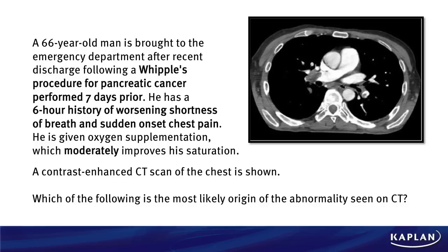A contrast-enhanced CT scan of the chest is shown. Note it's not just a CT scan — you've got contrast enhancement. Why should we order it with contrast enhancement? It's got to be important for this question. The question asks: which of the following is the most likely origin of the abnormality seen on the CT? You want to take a look at the CT before you even look at those answer choices. Some basic understanding and interpretation of CT scans can help you out here.